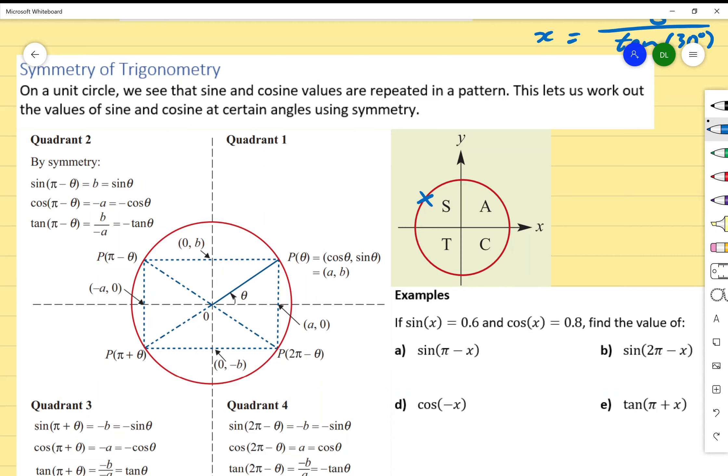So in this quadrant, A stands for All—all the functions are positive. In this quadrant, S stands for Sine—only sine is positive. T stands for Tan, and C stands for Cosine. So only sine, tan, and cosine are positive in their respective quadrants, and A means all of them are positive in the first quadrant.